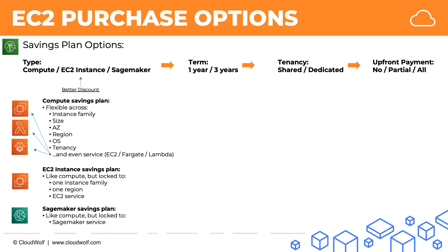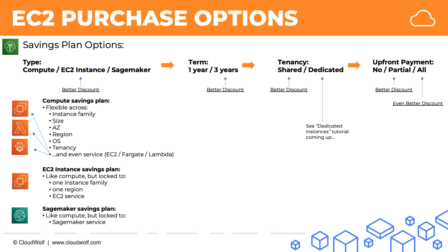In terms of the other options: you get a better discount for a three-year term. For tenancy, you get a better discount for shared — we'll talk about dedicated in an upcoming tutorial. And for upfront payment, you get the best discount for all upfront.